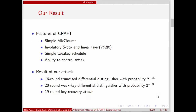In this paper, we found some features of CRAFT. CRAFT is a lightweight tweakable block cipher using many involutory and simple components: simple MixColumn, involutory S-box, permutation layer, and simple tweakey schedule. CRAFT is a tweakable block cipher, so the attacker can control the tweak. All of these features provide convenience for attackers. Using these features of CRAFT, we found a 16-round distinguisher with probability 2 to the power minus 55, and a 20-round tweakable differential distinguisher with probability 2 to the power minus 63. We performed a key recovery attack on CRAFT for the first time.